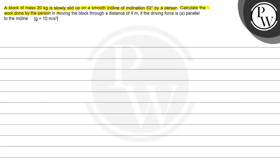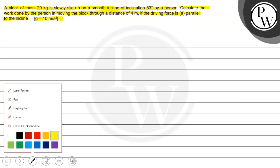Calculate the work done by the person in moving the block through a distance of 4 meter if the driving force is parallel to the incline. G is equal to 10 meter per second square. So we will solve this question.